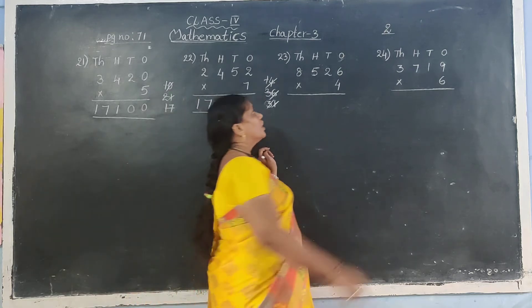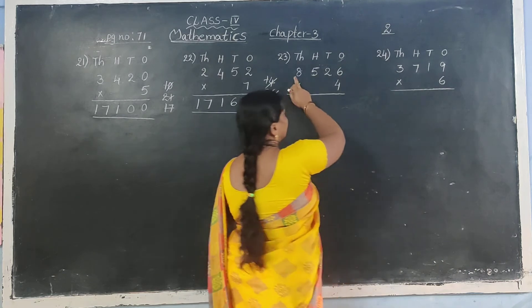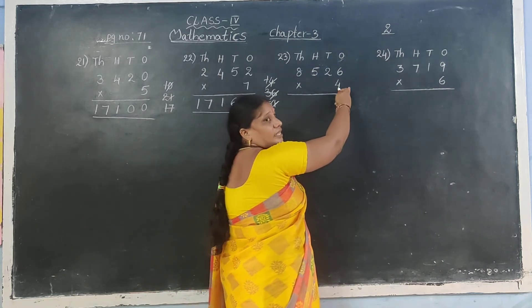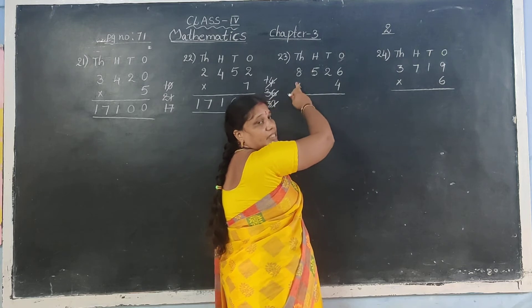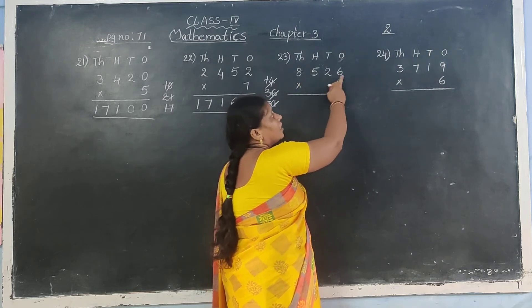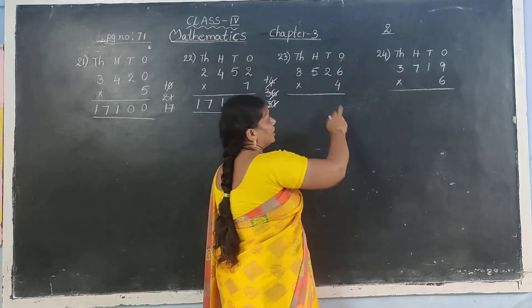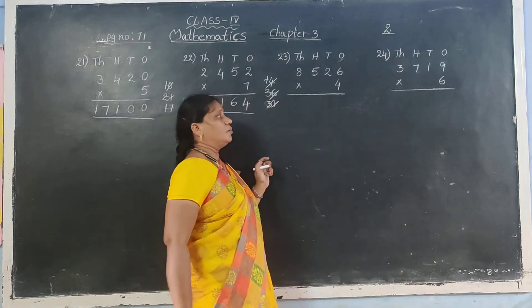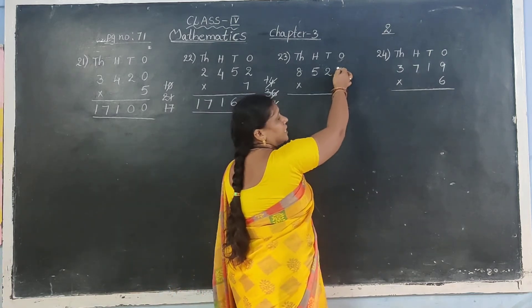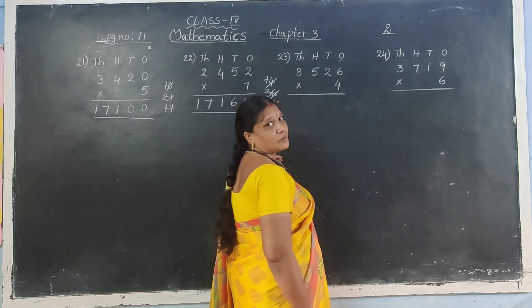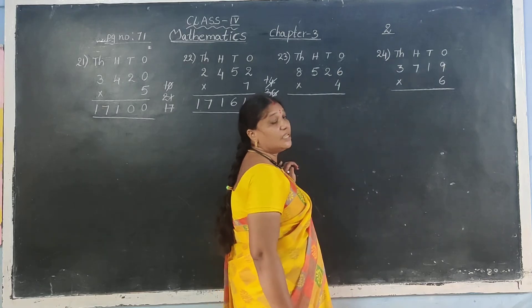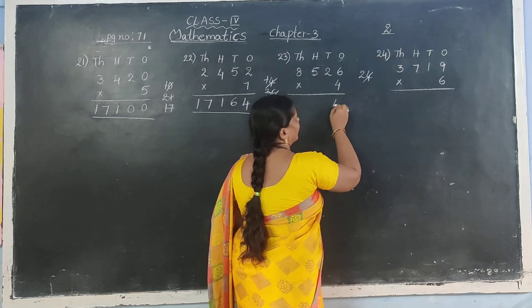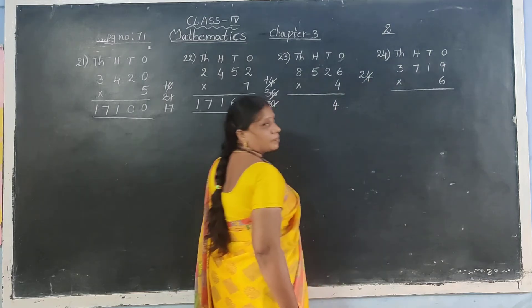Next sum: 23rd sum. Read the number first: 8,526 multiply with 4. Which table? 4 table. 4 sixes are 24. Write 4 in answer, carry 2.